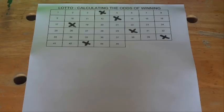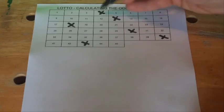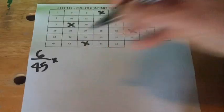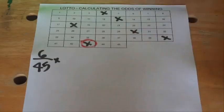To work out the odds, when the first ball drops, you've got six numbers or six chances out of a total of 45 balls in the drum of getting one of your selected numbers.